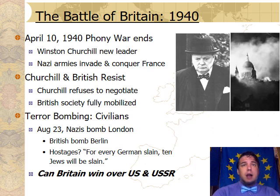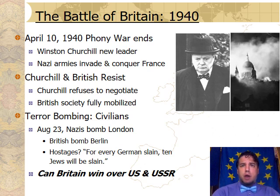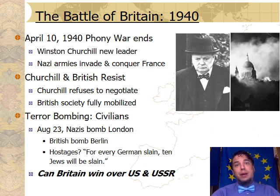Winston Churchill was contacted by Adolf Hitler, with Hitler arguing that if Churchill was willing to sign a peace, Hitler would come to peace with the British Empire. Winston Churchill, in return, made a speech to the British people where he said, 'I have nothing to offer you but blood, sweat, tears, and suffering, but we shall never surrender to Adolf Hitler.' What this meant was that the British Empire, which was still one quarter of the world's population, was fully mobilized against the forces of Nazi Germany.